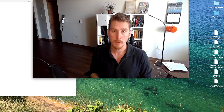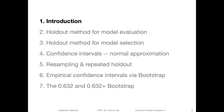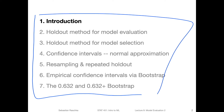So with that, let's get started. This is the second video on model evaluation, and we are going to cover confidence intervals and resampling methods. Here's the overview of topics we will cover in this lecture. I've tried to separate them a bit more so that the videos are shorter. We will start with an introduction, then talk about the holdout method for model evaluation, then the holdout method for model selection - the difference being that one is used just for evaluating a model, while the other is for selecting a model. Then we will look at confidence intervals and how to construct them for our performance estimates.